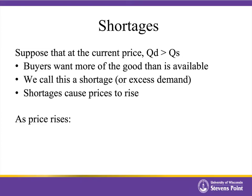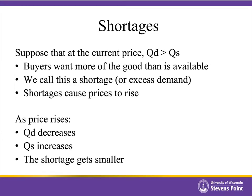As the price goes up, we move along the demand curve, and we see that the quantity demanded is decreasing. And simultaneously, we're moving along the supply curve, and with the higher price, quantity supplied is increasing. So the two are becoming more equal, and the shortage is getting smaller.